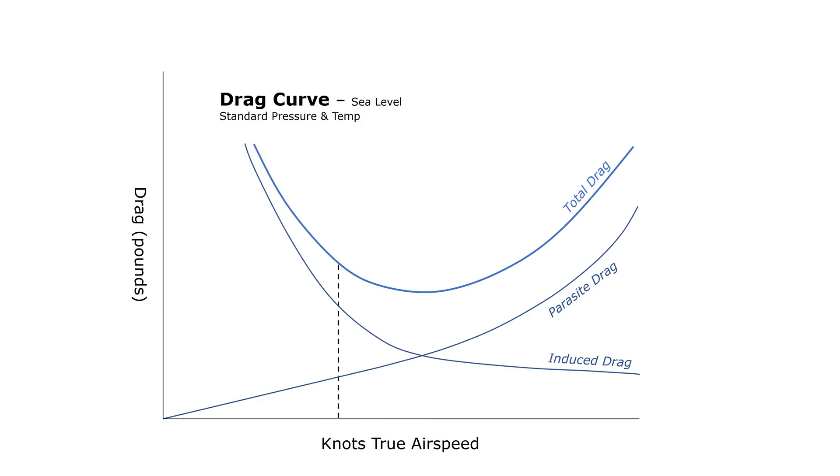Any reduction or increase in speed from this point, and we'll have to accept an increase in drag. This minimum total drag is also called the maximum lift-to-drag ratio. For a given amount of lift, we have the least amount of drag at this speed.